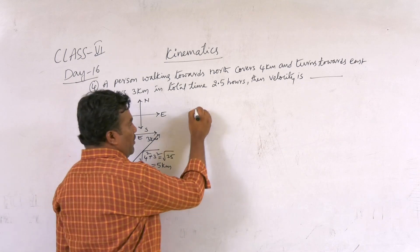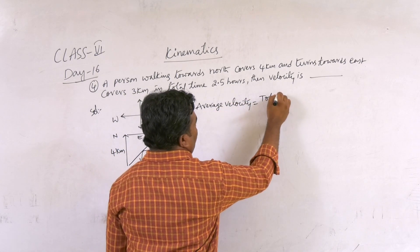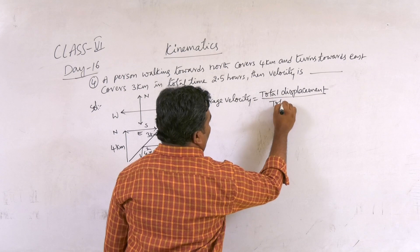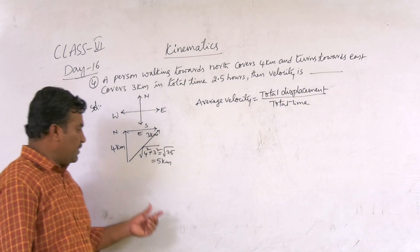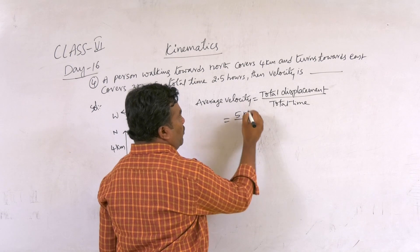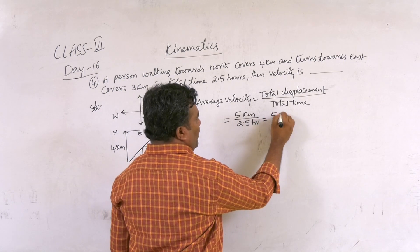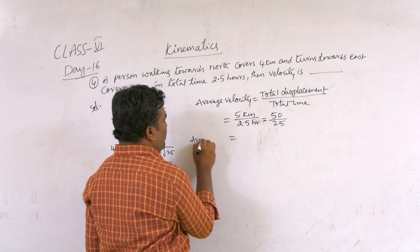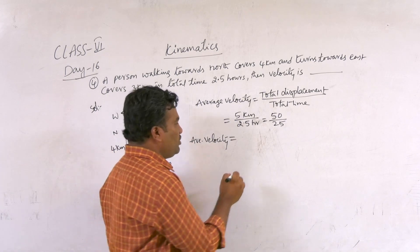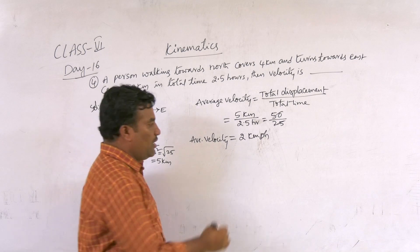Therefore, average velocity equals total displacement divided by total time taken. Total displacement from initial to final position is 5 km. Total time is 2.5 hours. So we calculate 50 divided by 25, giving us 2 km per hour. The average velocity of the person walking north and then turning east is 2 km per hour.